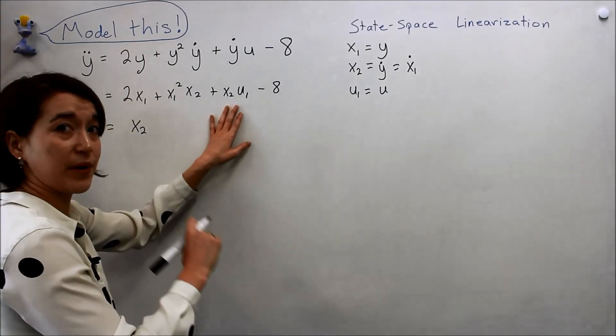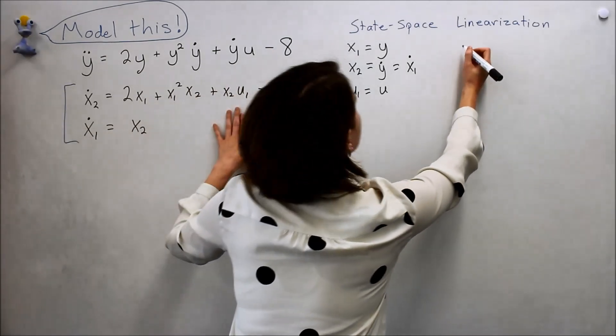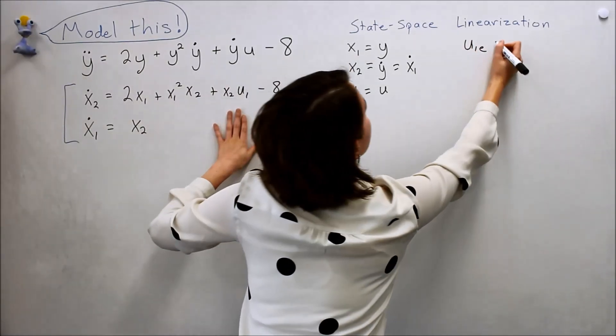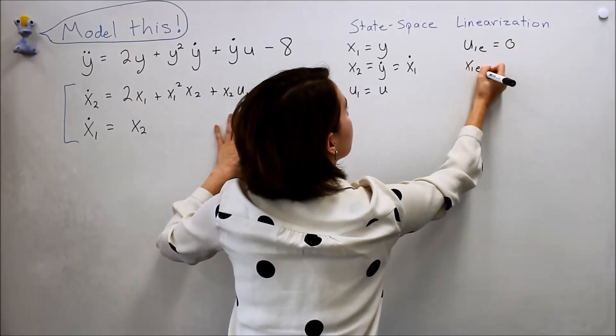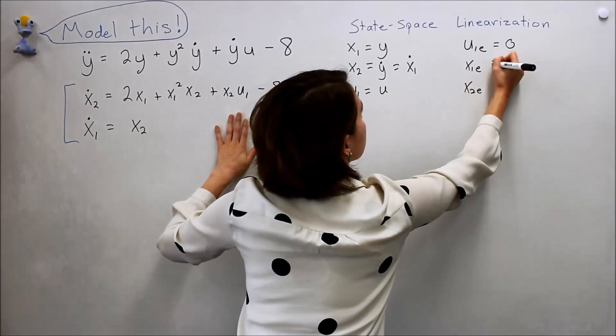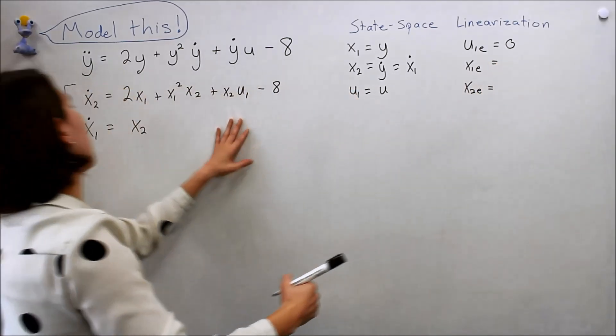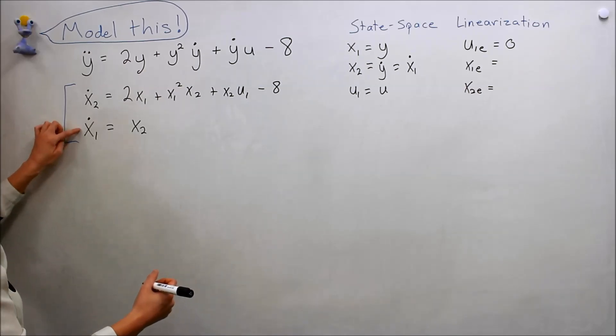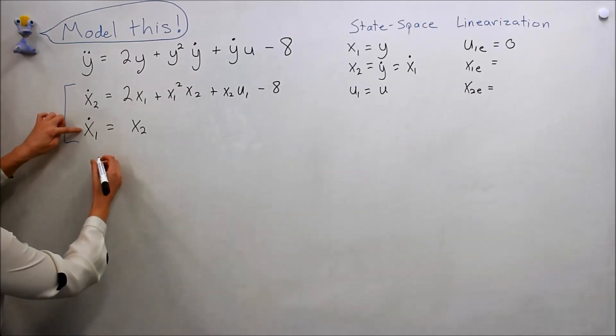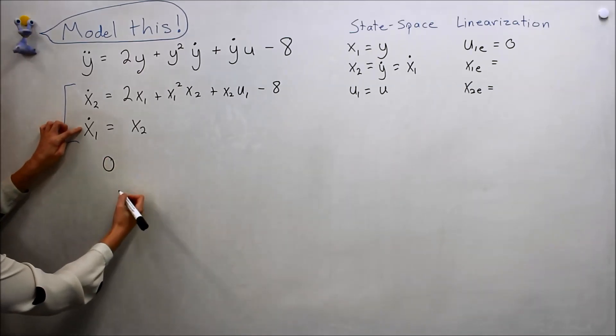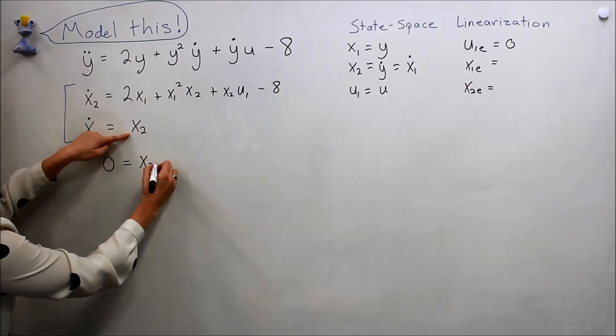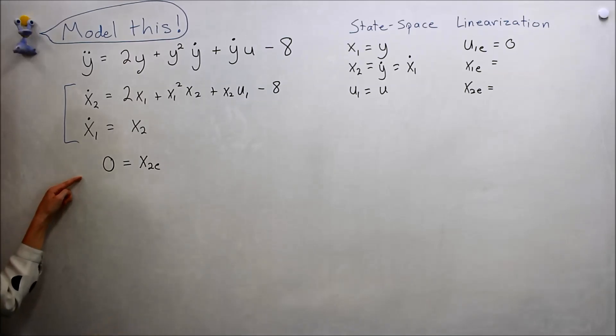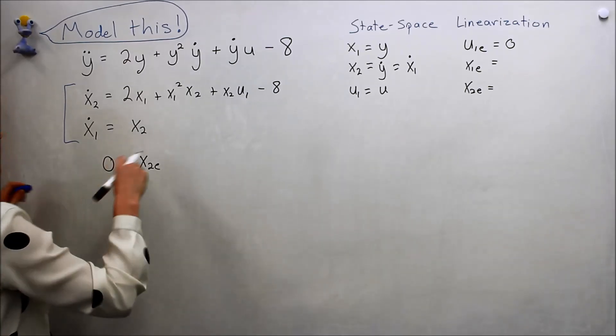We also assume that the equilibrium point of u is zero, so u1e equals zero. Now we need to find x1e and x2e. Let's start with this equation. If we do x1 dot equals zero, then the equilibrium point of x2 must be zero. Pretty straightforward. So there's one equilibrium point.